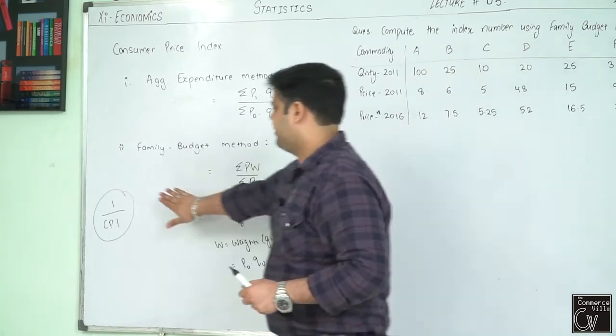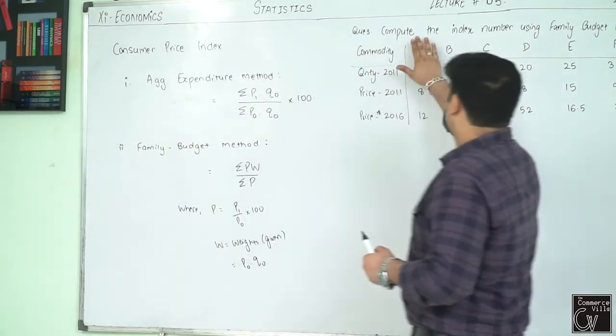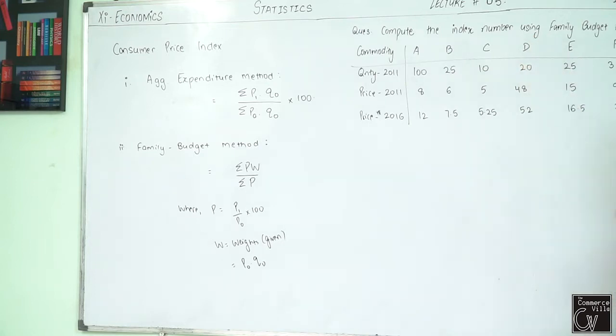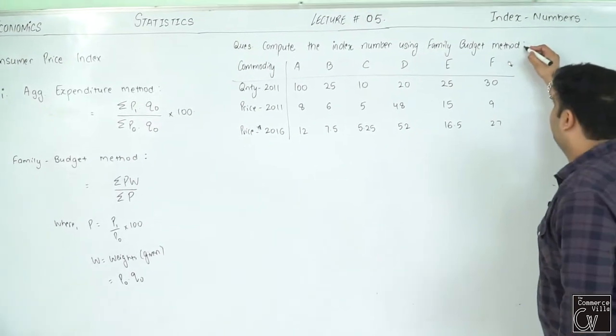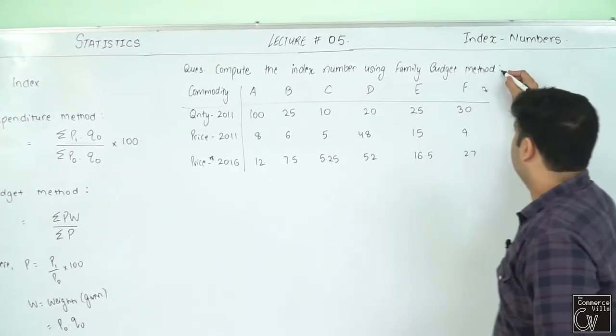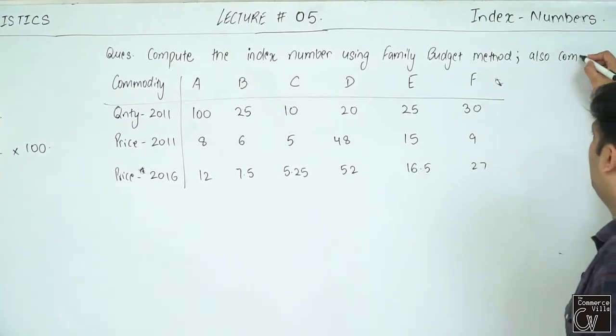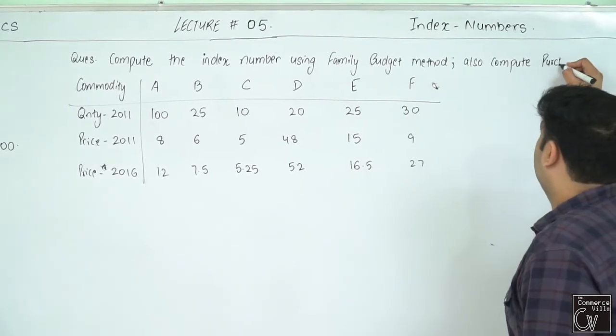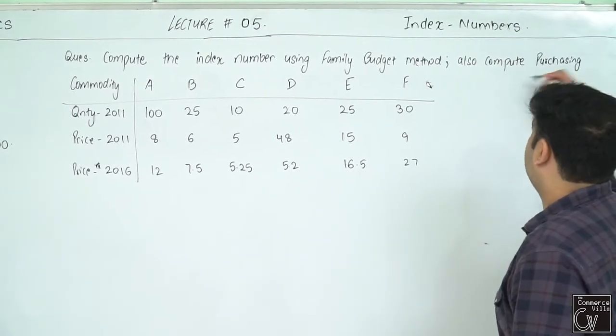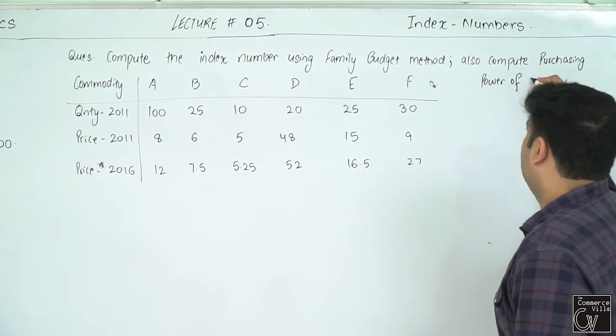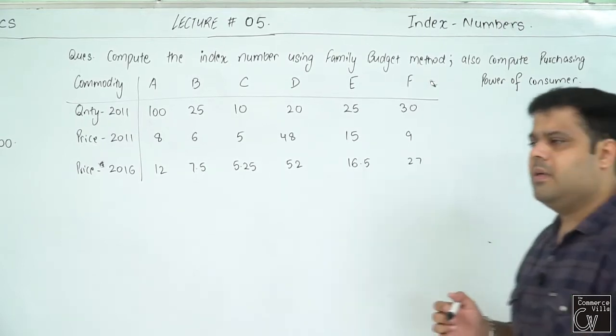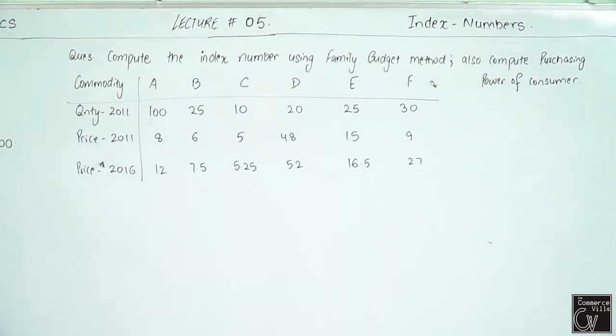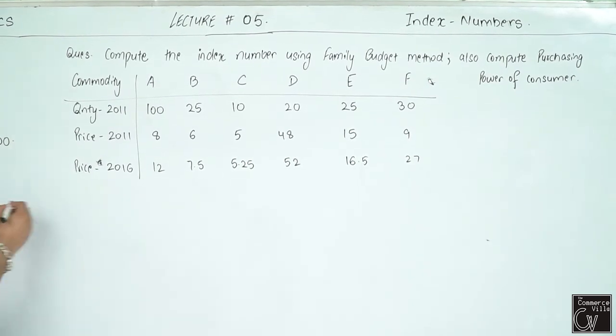Let's write down the question. Question number 2. Compute the index number using family budget method. Then also compute purchasing power of consumer. This is your question. Note down the question.